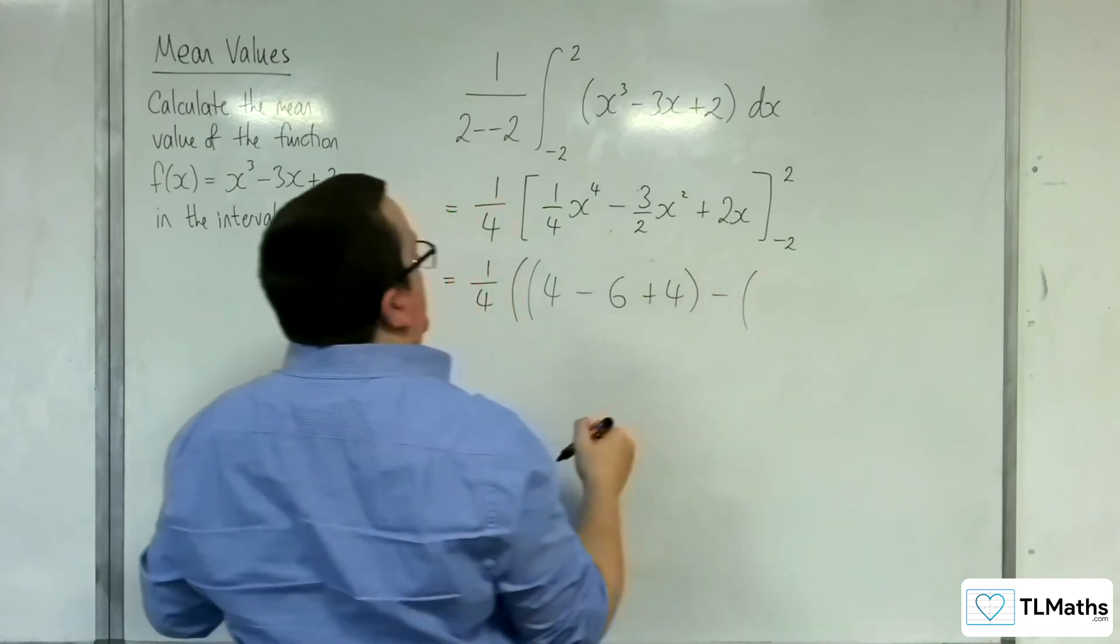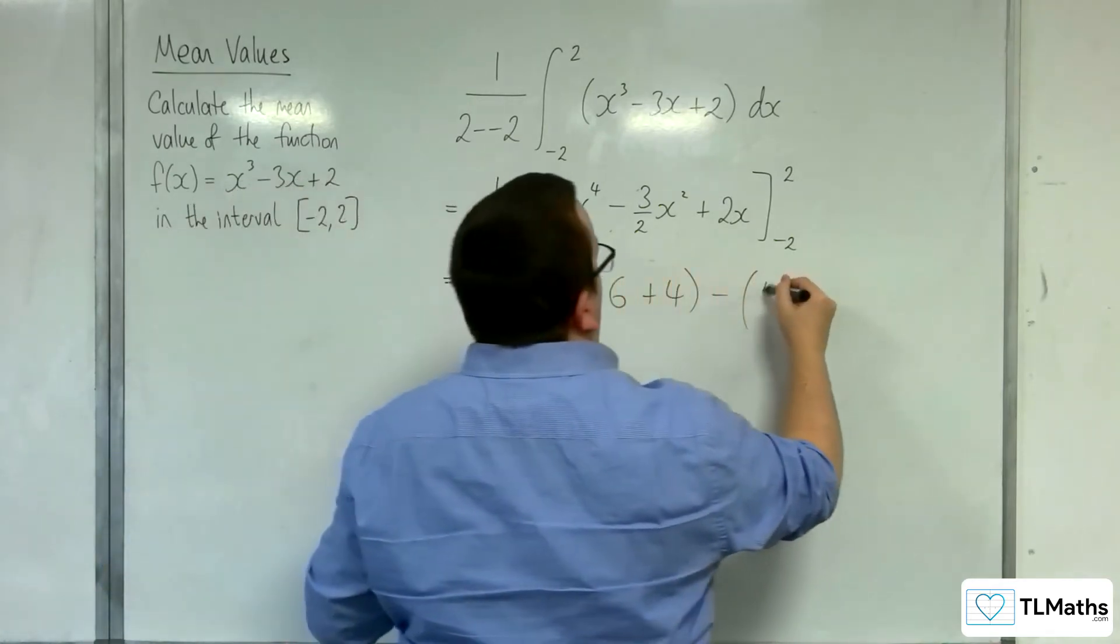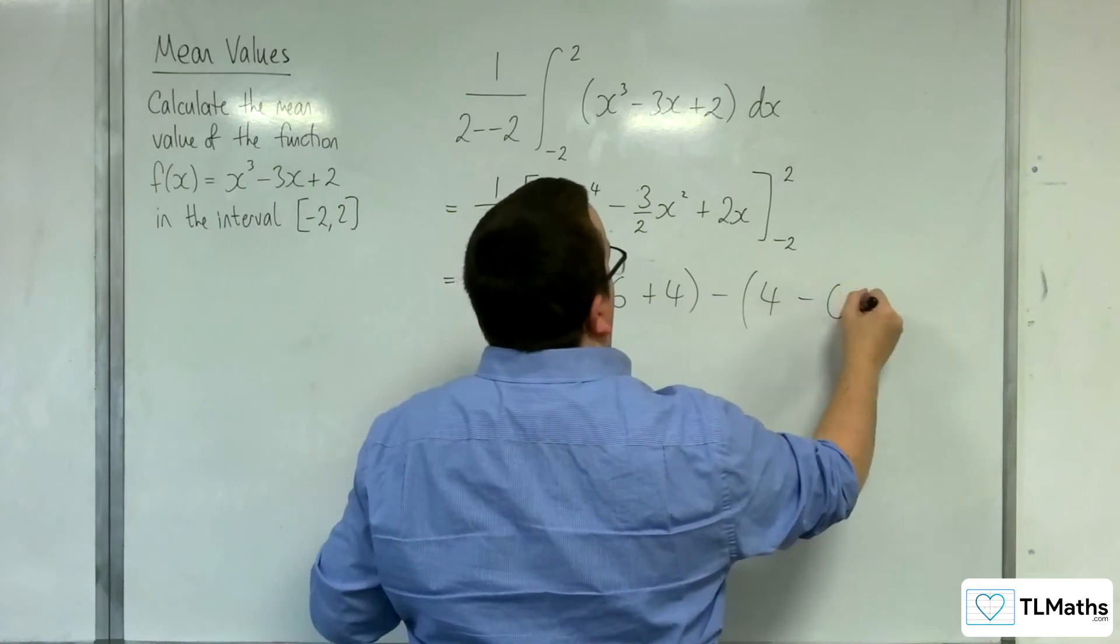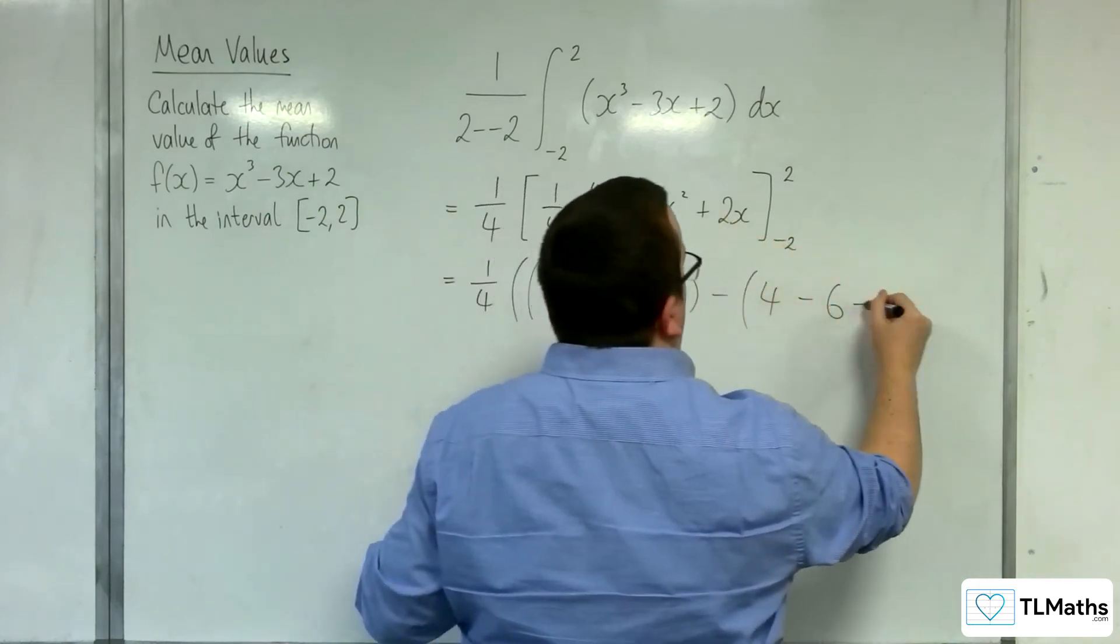And then substituting in the -2, we're going to get 4 take away 6, take away 4.